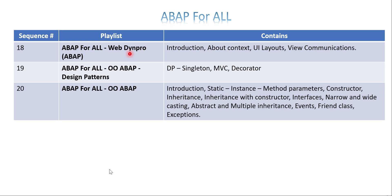Once you are done with those, you can go through object-oriented ABAP - I think this comes earlier in some flows, but if you want to learn OO ABAP you can go through it. I recently changed the playlist name from 'OO ABAP' to 'ABAP for All' and 'OO'. Finally, design patterns is very specific - if you are currently working on design patterns, this playlist will help. That covers all 20 playlists.